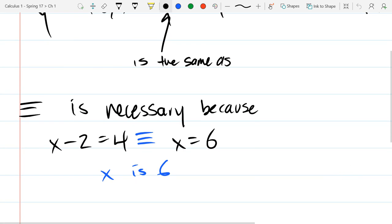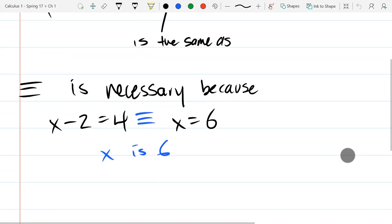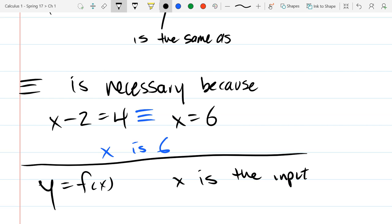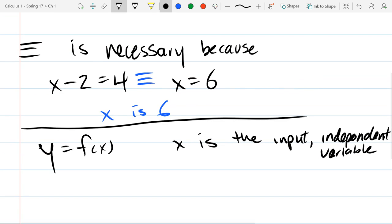So, we got triple equal sign. When you have a function of x, x is the input, also known as independent variable. And y is the output. We call that the dependent variable.